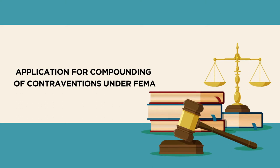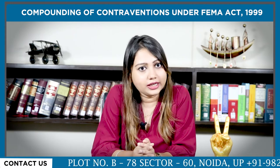Applications for compounding of contraventions under FEMA: the application for compounding can be submitted along with the prescribed fee of 5,000 rupees through demand draft drawn in favor of RBI and payable at the concerned regional office or CO cell New Delhi. Such applications submitted to the RBI should have the contact details of the applicant and authorized official or representative of the applicant. The compounding authority will pass an order of compounding but not before providing an opportunity of being heard to all concerned, as expeditiously as possible but not later than 180 days from the application date.